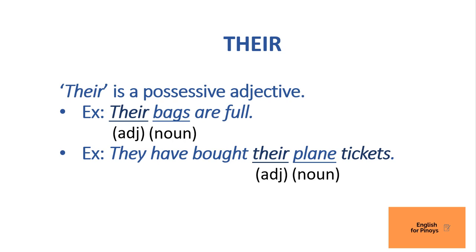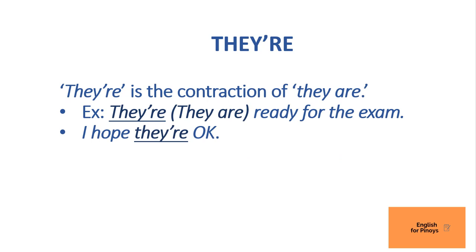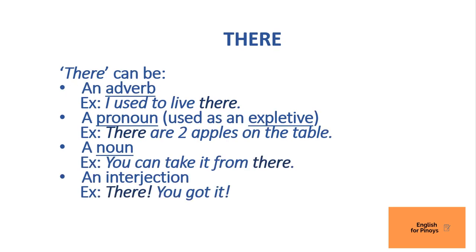The third word is spelled T-H-E-Y apostrophe R-E, or 'they're'. An apostrophe in the middle of a word signals a contraction — you're combining two words, shortening and abbreviating them. 'They're' is the contraction of 'they are'. For example: 'They're ready for the exam' means 'they are ready for the exam.' Another: 'I hope they're okay' means 'I hope they are okay.' You can't substitute the other spellings there — it just doesn't make sense.